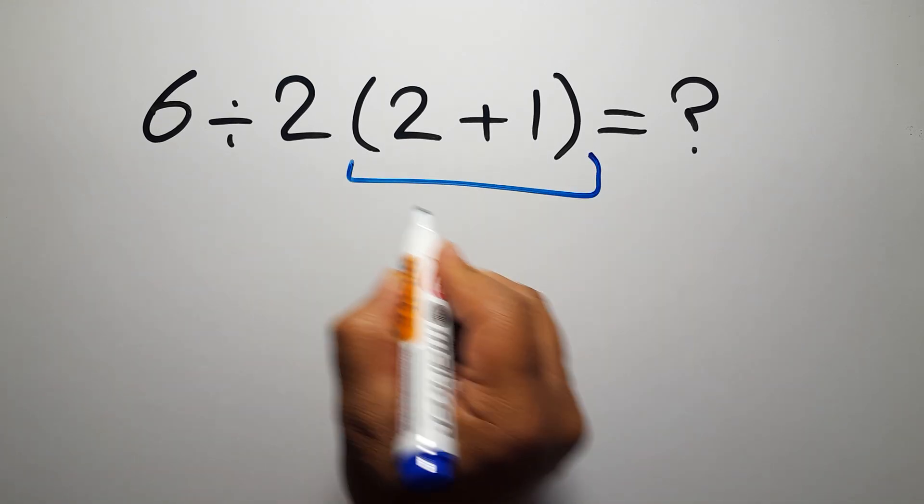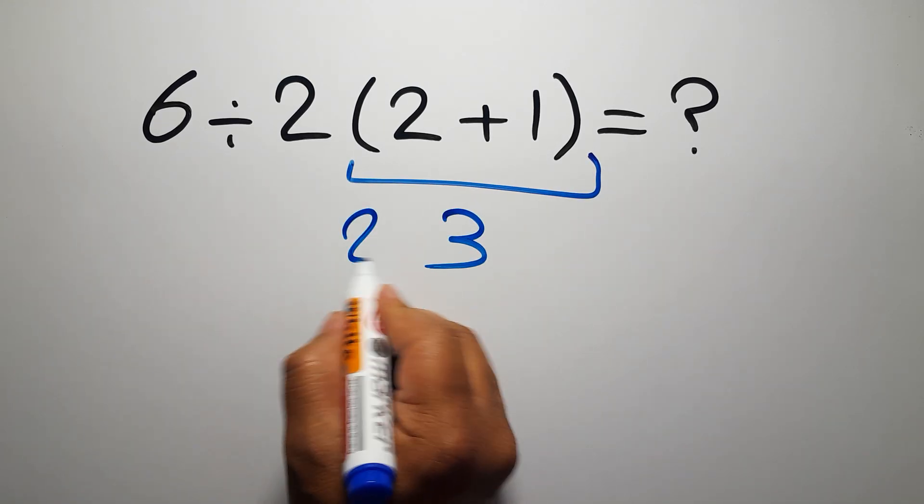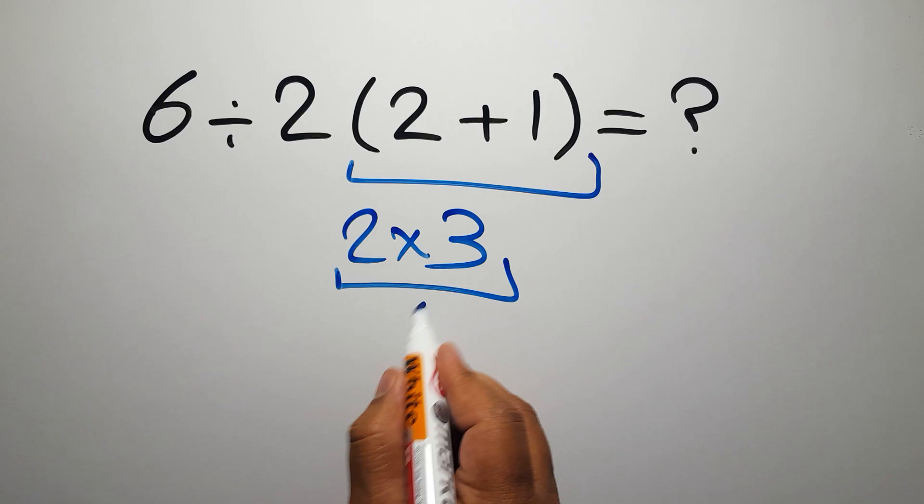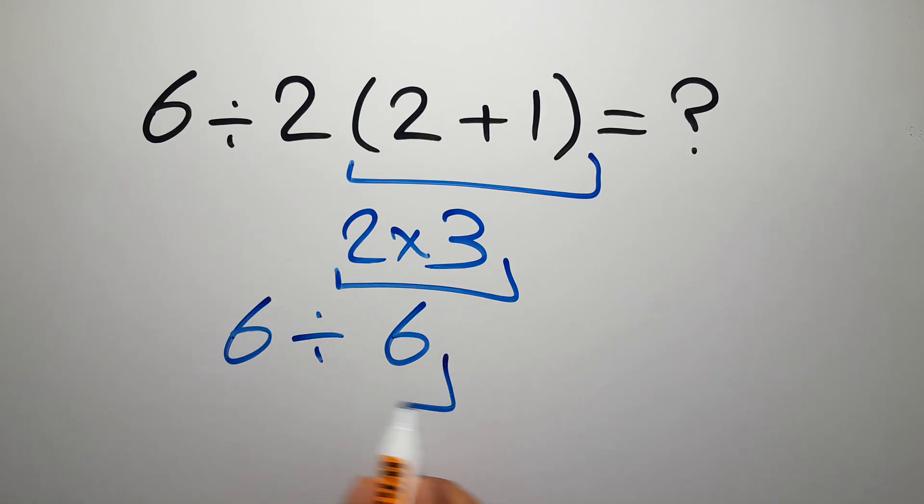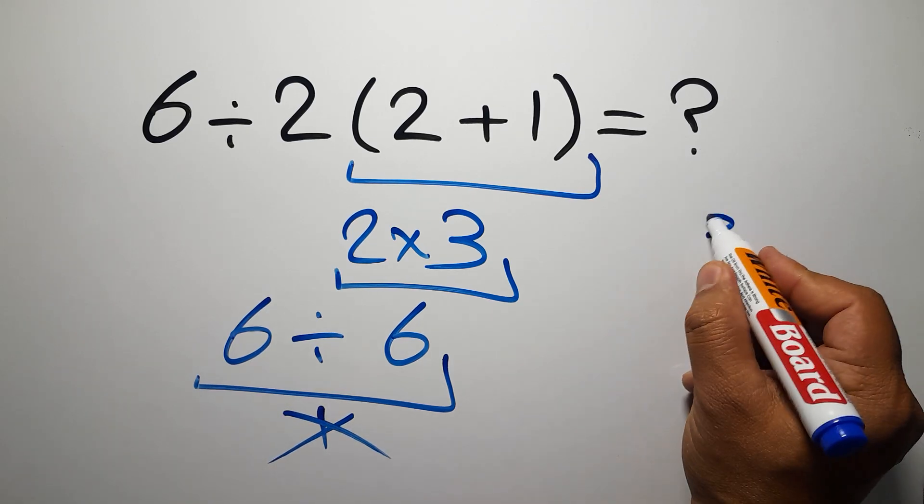2 plus 1 equals 3, so 2 times 3 gives us 6, and 6 divided by 6 is just 1. But this answer is not correct because according to the order of operations, first we have to do parentheses, then exponents, then multiplication or division, and finally addition or subtraction.